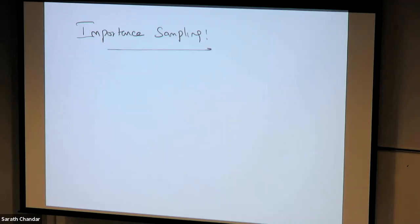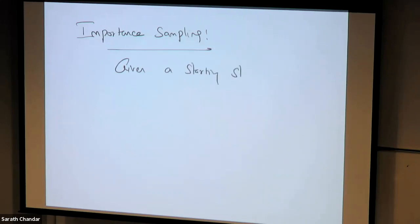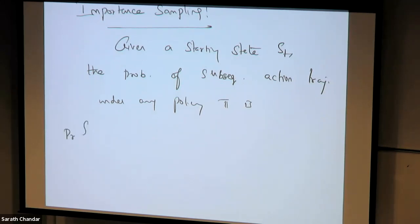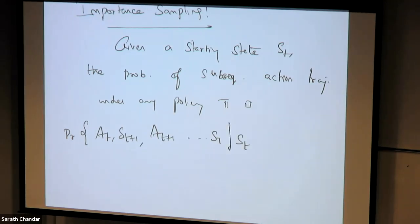Importance sampling is a neat idea where you can compute estimates with respect to something you have never experienced, given at least the probability distributions of the policies. Let's construct the importance sampling ratio. Given a starting state s_t, the probability of a subsequent action-state trajectory under policy pi is a product from k = t to T-1 of pi(a_k | s_k) times p(s_{k+1} | s_k, a_k) — that is, the policy probability times the transition dynamics.